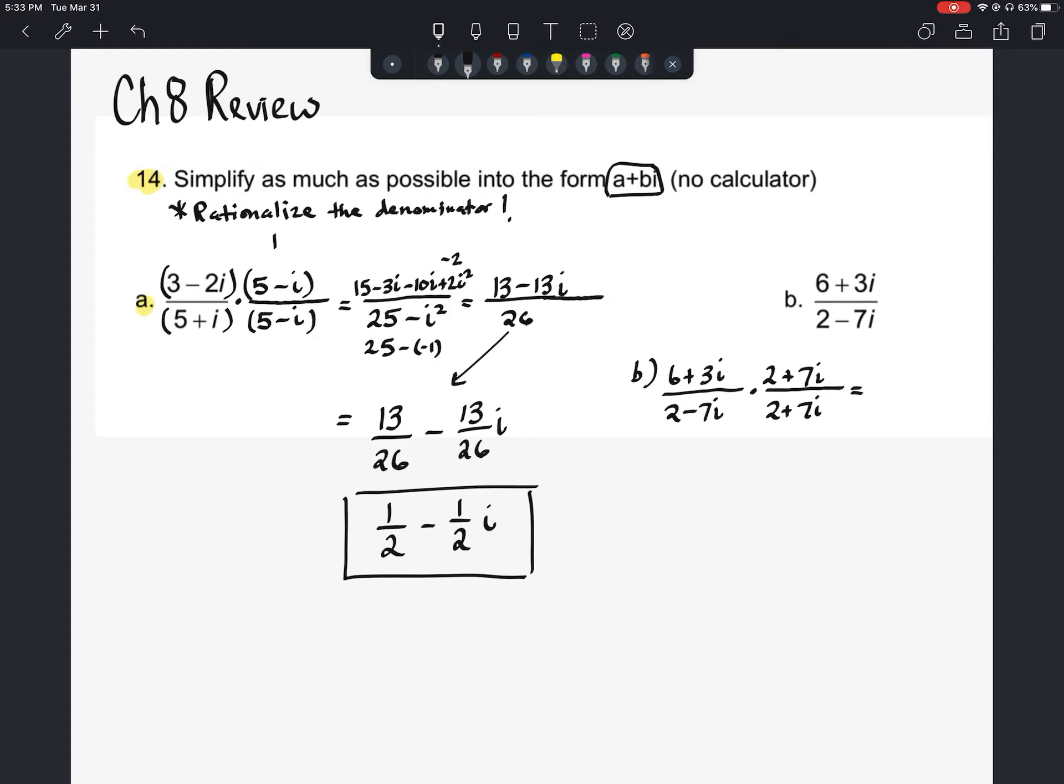So as we take this here and we multiply it out, 2 minus 7i times 2 plus 7i should give me 4 minus 49i squared, which would be like 4 plus 49, which would be 53.